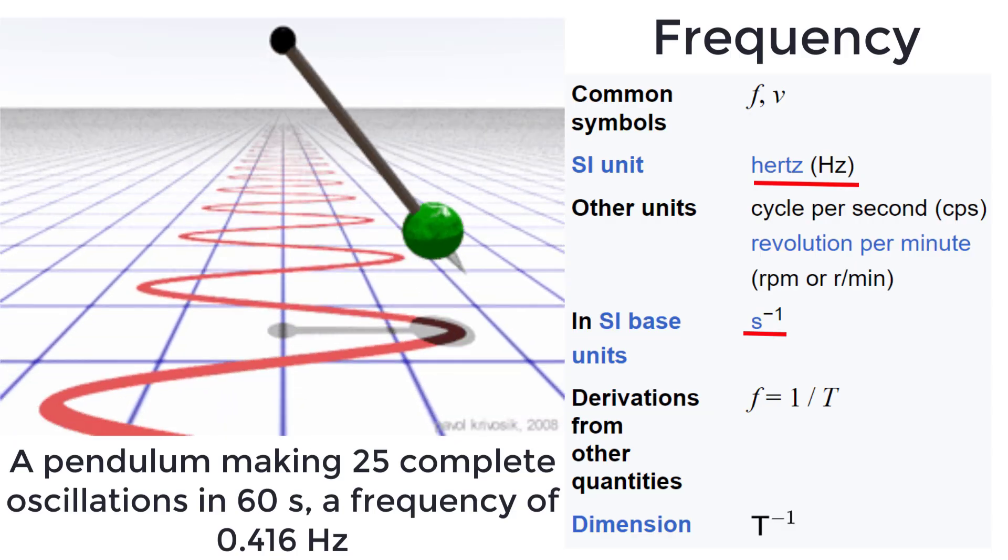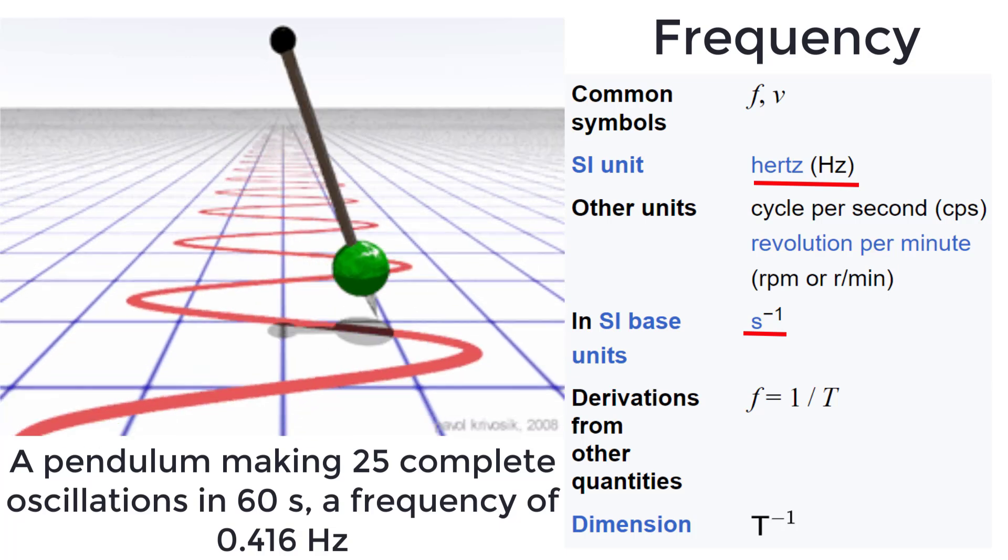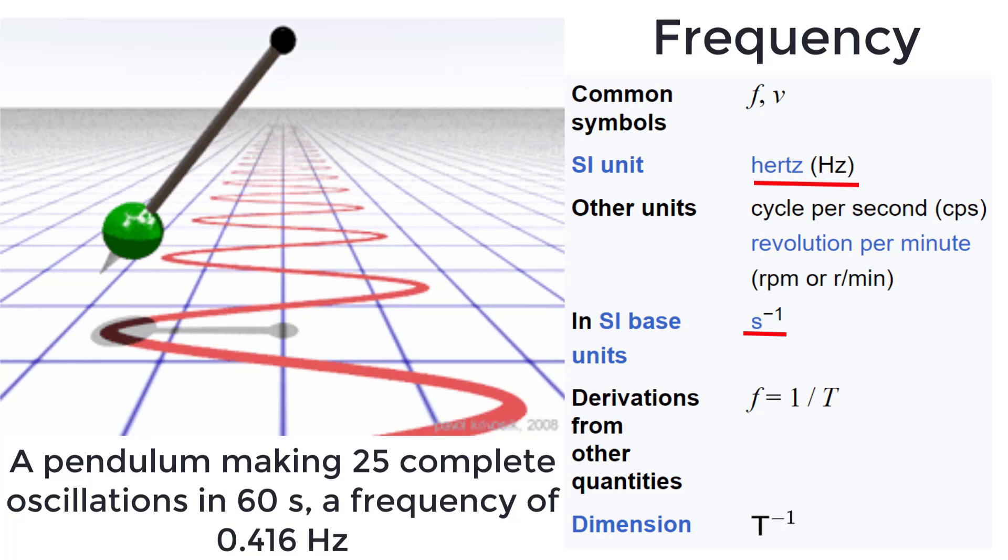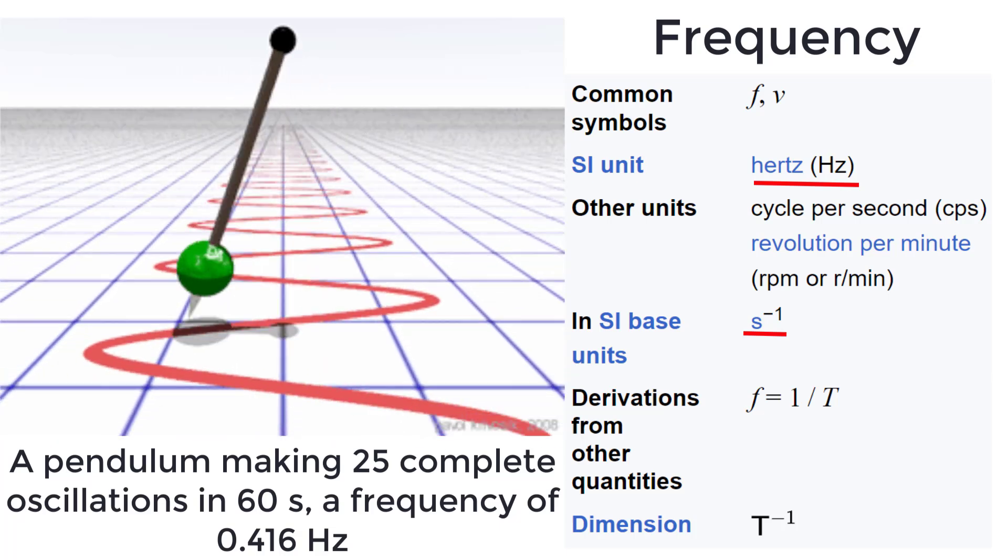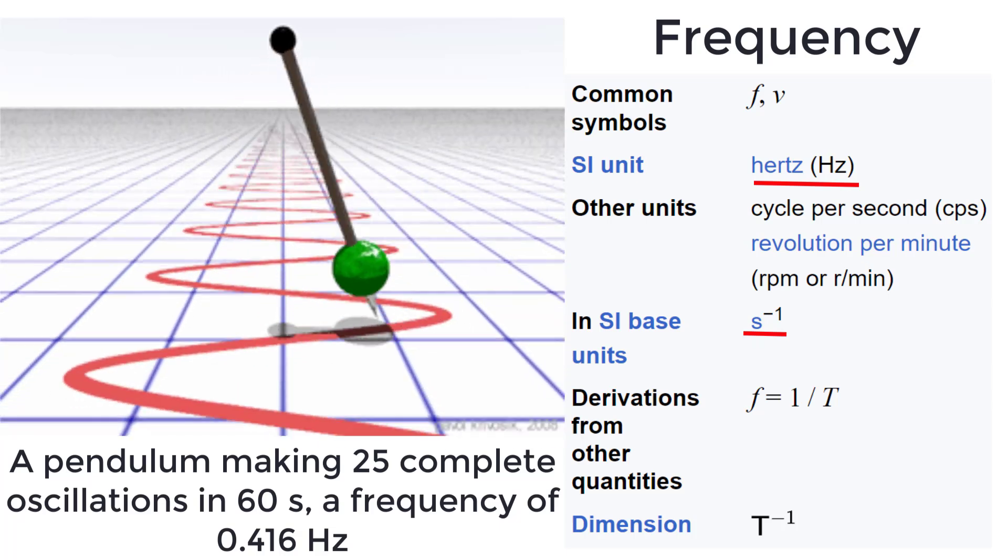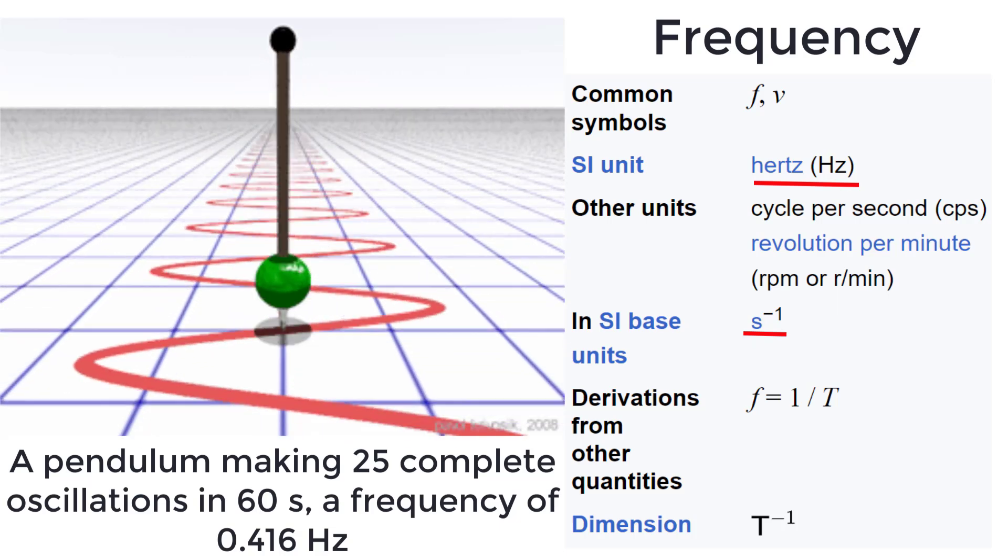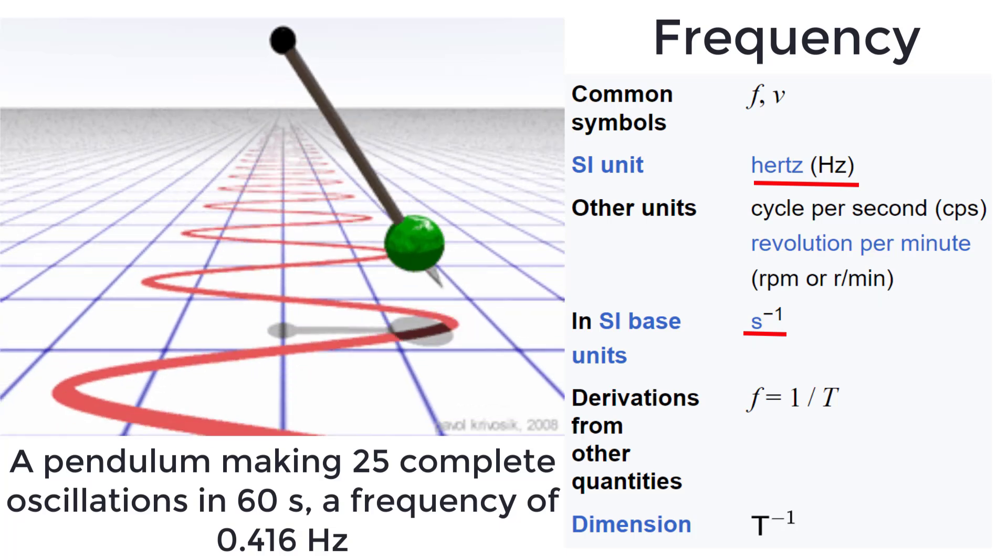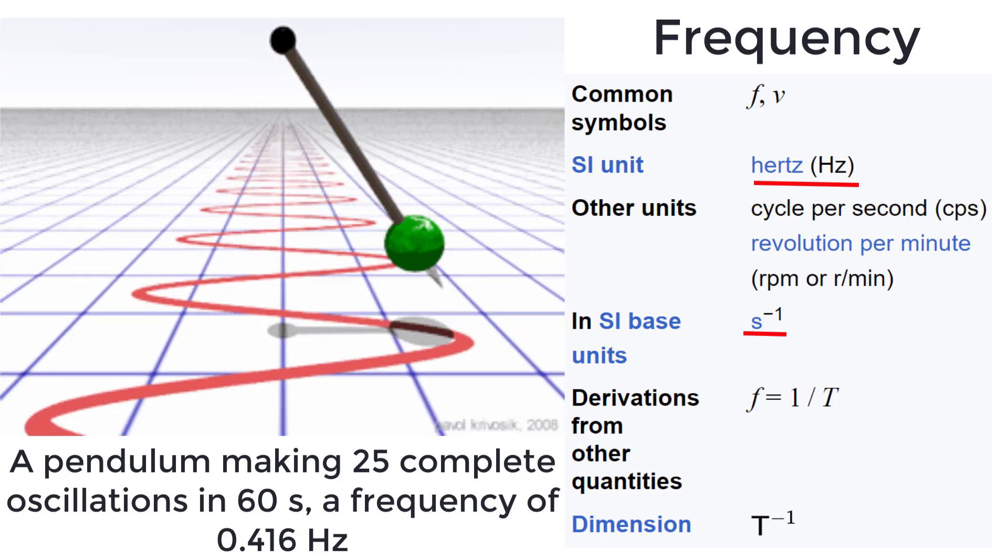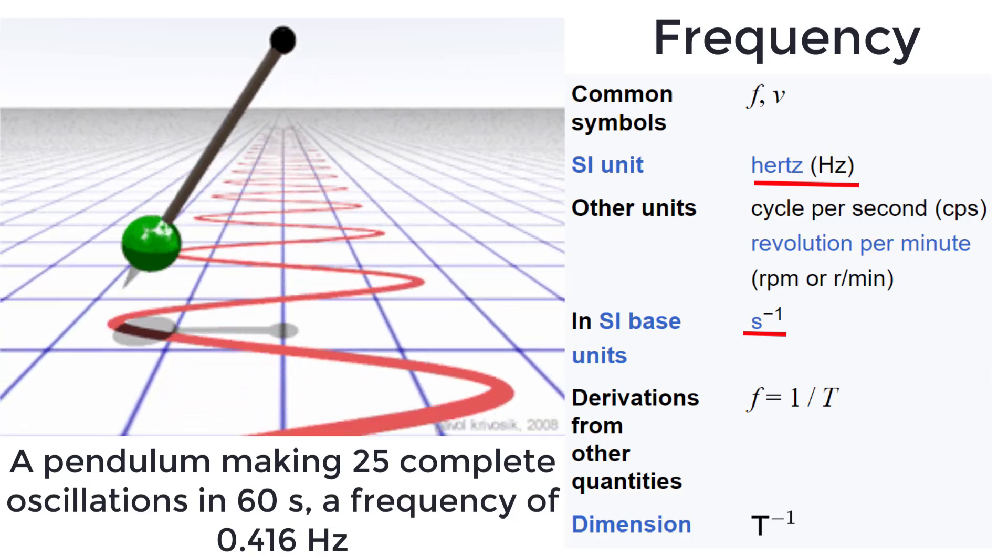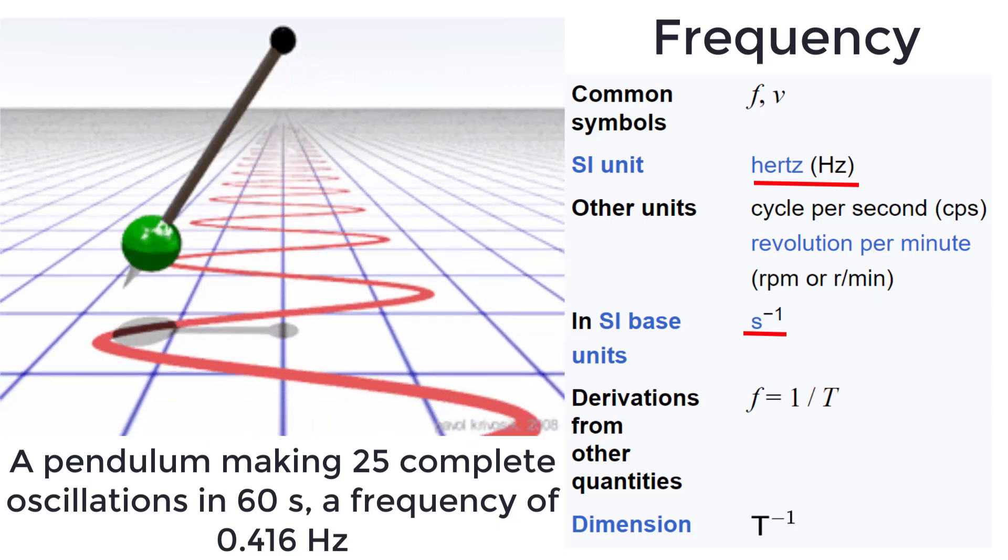Frequency is the number of cycles or oscillations per unit time. The international standard or SI unit for frequency is Hertz, which has base units of one over second or second to the power of negative one. A pendulum is shown making 25 complete oscillations in 60 seconds, which gives a frequency of 0.416 Hertz.